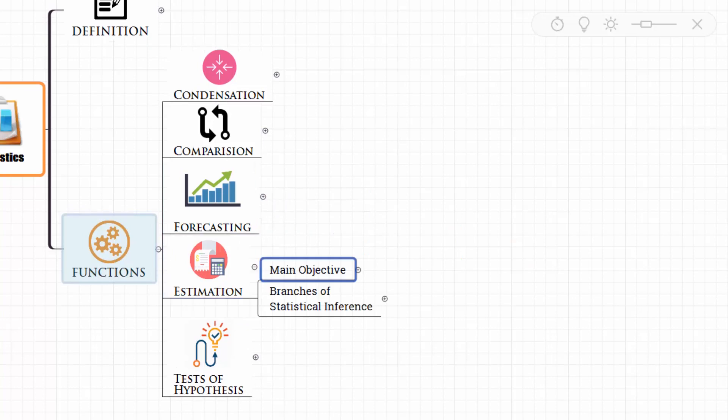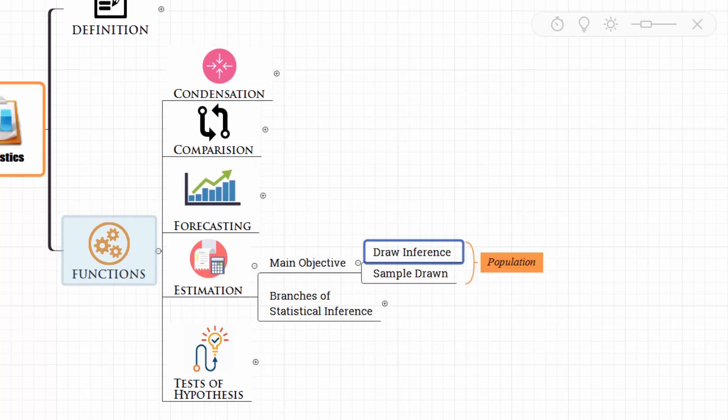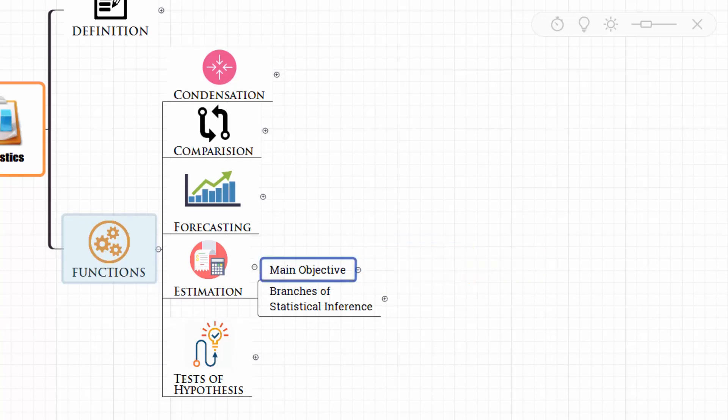Next comes estimation. Here the main objective is to draw inference about the population from the sample drawn from the population. Statistics helps us estimate how we will draw inference about the population from the sample drawn from the population.